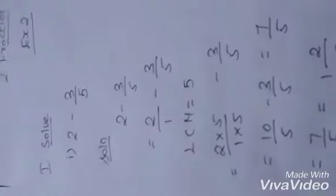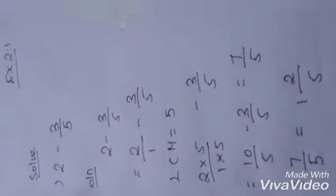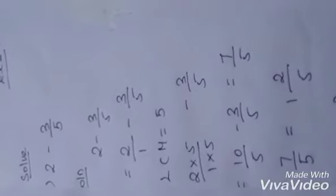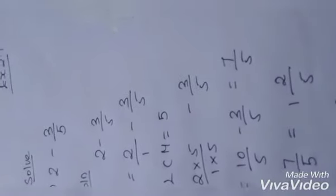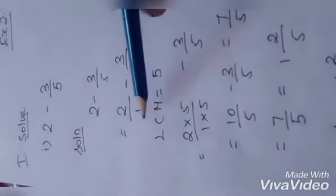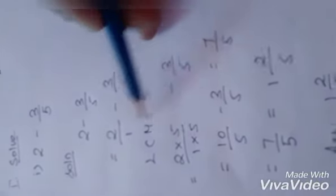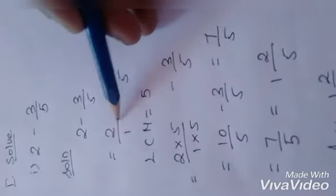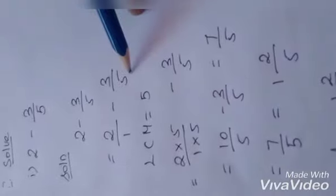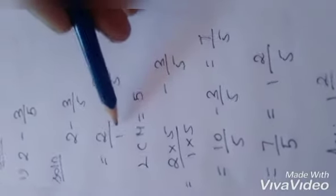When taking the LCM, children, always remember to use only the prime numbers. The prime numbers are 2, 3, 5, 7, 11, 13 — the number itself is a factor and no other number will be a factor of that number. So I am using 5, and the LCM is equal to 5. Now I have to make the denominators the same using this LCM.